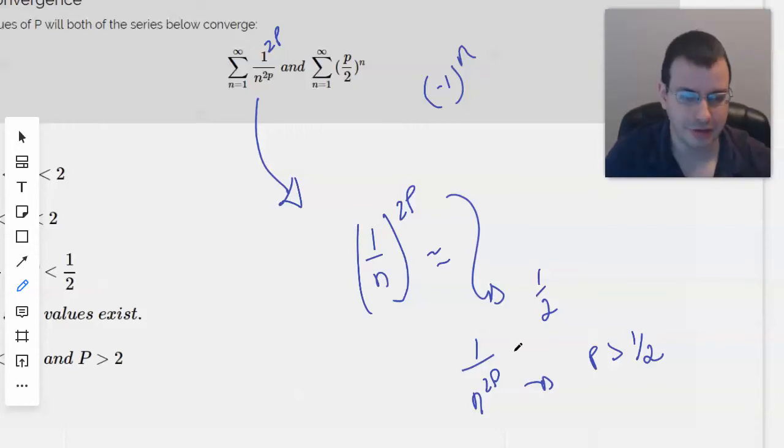So if we have 2 times 1 half, we get 1, then we get 1 over N to the first. So if it's anything slightly larger than that, with the P being larger than that, then it will converge. So this is our condition that we get from the first series.